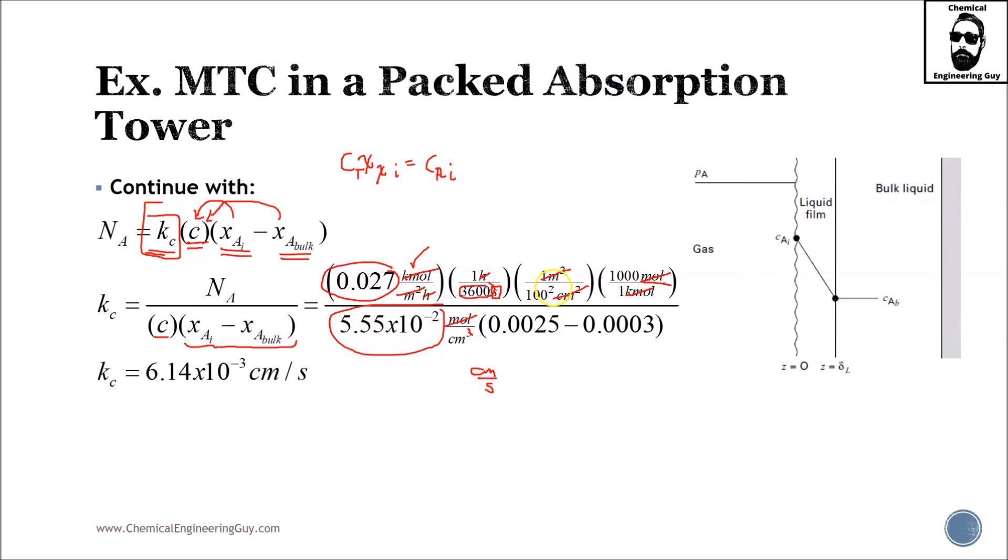And now I perform all the numerical data. It's essentially this part right here. And the molar fractions, which are dimensionless. And I get the following. Kc equals 6.14 times 10 to the minus 3 centimeters per second.